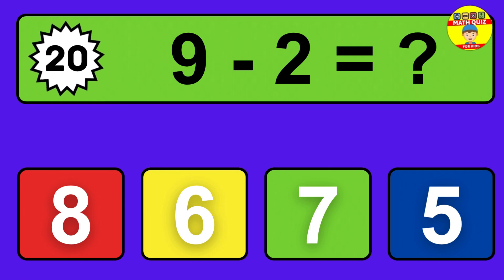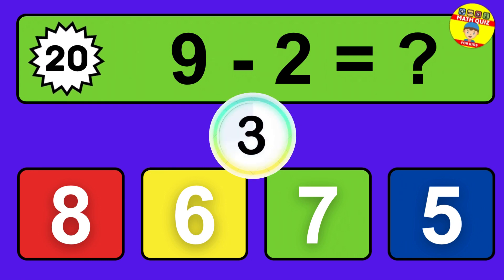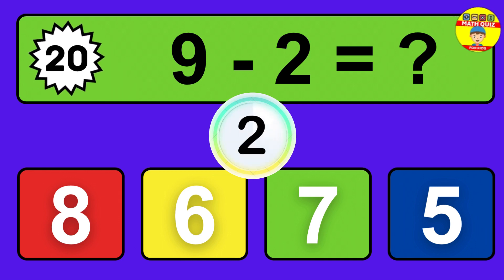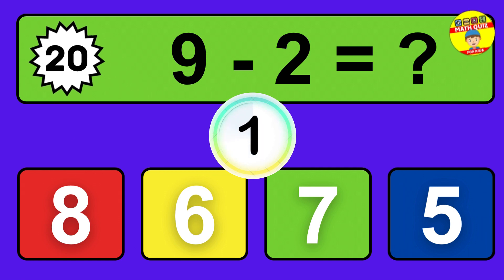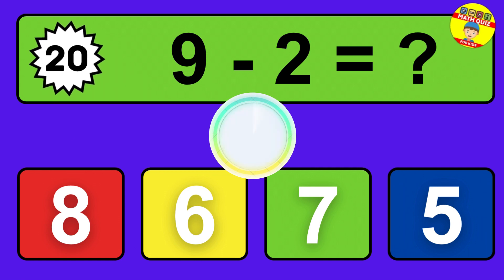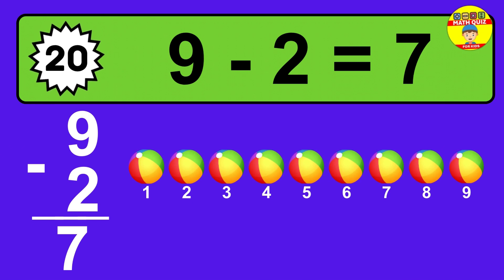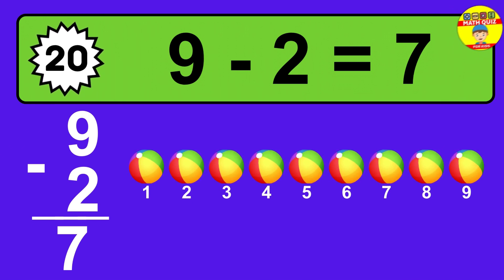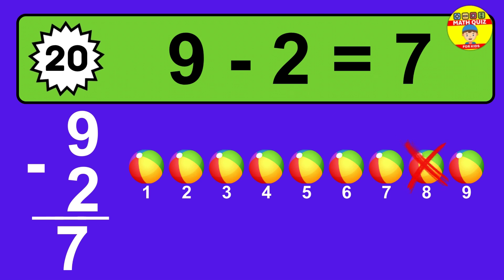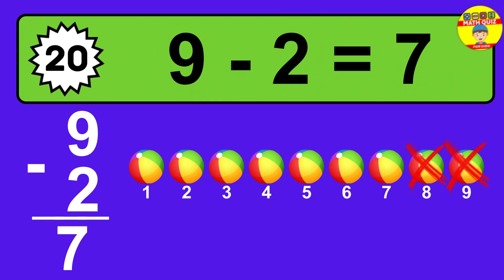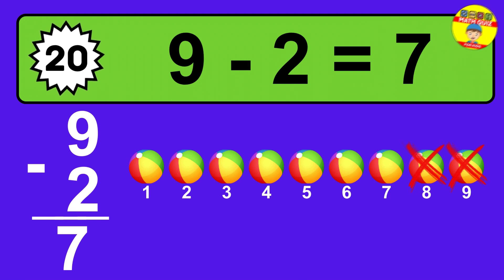Question twenty: nine minus two equals what? The answer is nine minus two is seven. Let's count it. One, two, three, four, five, six, seven.